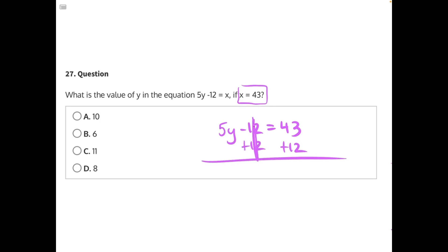This will cancel, leaving us with 5y equals... 3 plus 2 is 5, 4 plus 1 is 5, 55.